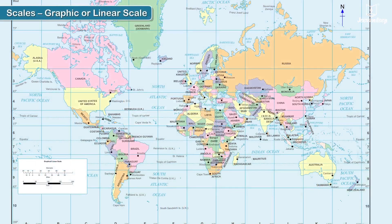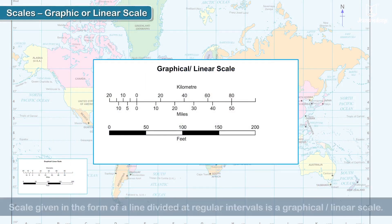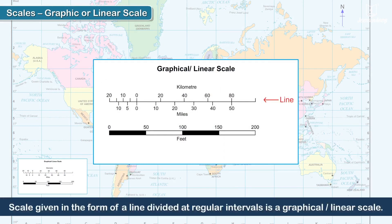Graphic Scale or Linear Scale: When the scale is not given in a statement form but instead is in the form of a line divided at regular intervals, it is called a graphical or linear scale.